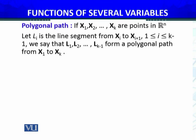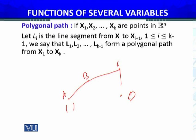What is a polygonal path? In R2 it is very simple. If you take points of R2 — say point A, point B, point C, point D — then the path A to B, B to C, C to D is the polygonal path.